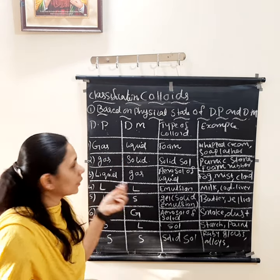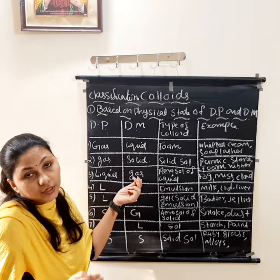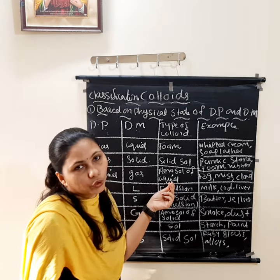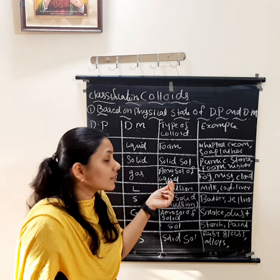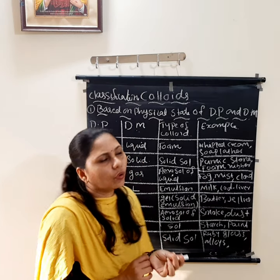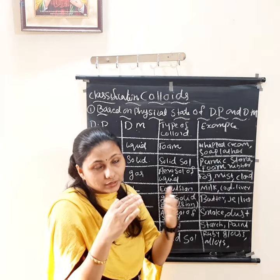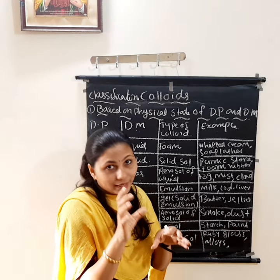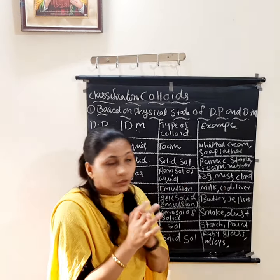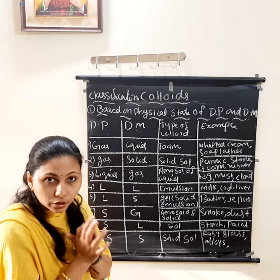The third type: dispersion phase is liquid and dispersion medium is gas — liquid is dissolved in gas. The name of that colloid is aerosol of liquid. Examples are fog, mist, and cloud. In fog, gas molecules contain moisture content within them. You can learn any one or two examples.